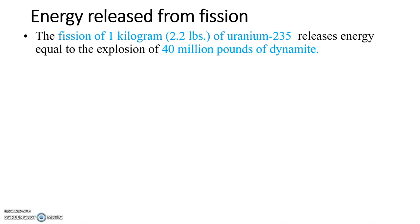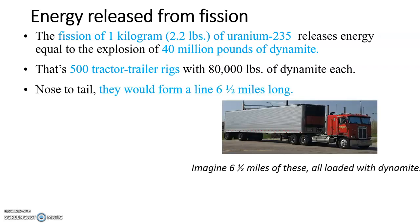Assuming we're talking about an atomic bomb, one kilogram (about 2.2 pounds) of uranium-235 releases the same amount of energy as 40 million pounds of dynamite. To help you visualize that, I did a little math - that's 500 tractor trailer rigs with 80,000 pounds of dynamite each. If you lined them up, all those tractor trailer rigs would form a line about six and a half miles long, just to help you visualize that from one bomb.